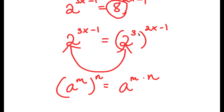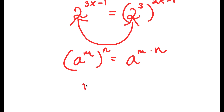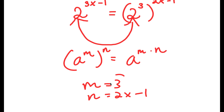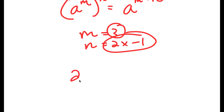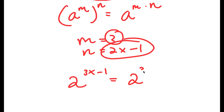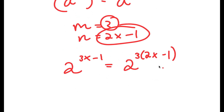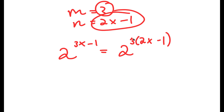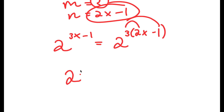In this case, we have 2 to the power of 3 to the power of 2x minus 1. We can think of m as 3 and n as 2x minus 1, so this equals 2 to the power of 3 times 2x minus 1. Now I have 2 to the power of 3x minus 1 equals 2 to the power of 3 times 2x minus 1. Distributing the 3 gives us 6x minus 3.